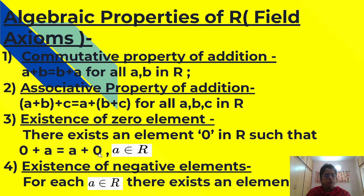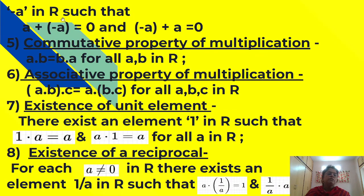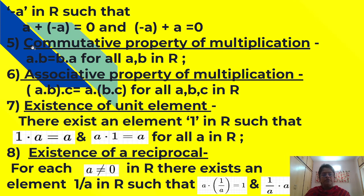If a is 5, then 0 plus 5 is equal to 5 plus 0. Fourth property: existence of negative elements. For each a belonging to R, there exists an element minus a in R such that a plus (minus a) is equal to 0, and minus a plus a is equal to 0. If a is 2, then minus a will be minus 2, and 2 and minus 2 addition will be 0.